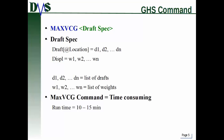So how do you type the command? The keyword is MAXVCG — M-A-X-V-C-G. Then you provide a draft specification, which can take two forms: you can type the keyword DRAFT at location equals and give it a list of drafts, or you can type the keyword DSPL for displacement equals and give it a list of weights. Either one works, and people have different opinions on which they prefer.